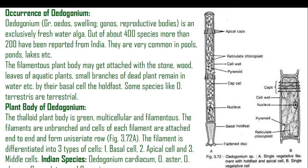The complete filamentous thallus body of Oedogonium possesses a basal holdfast, which is a flattened disc-like cell. At the apical region there is an apical cell which possesses apical caps, and in between the apical cell and basal cell there is a long elongated rectangular cell, called the middle cell, which is the most important part of the thallus and is also called a vegetative filament. In these diagrams, A shows the complete thallus of Oedogonium while B shows the vegetative cell.